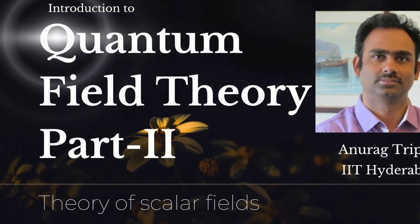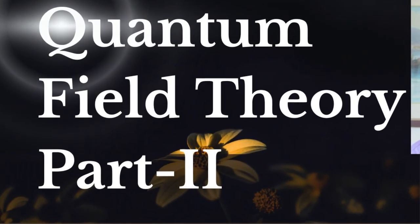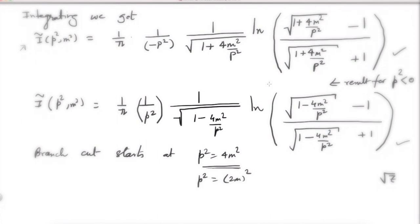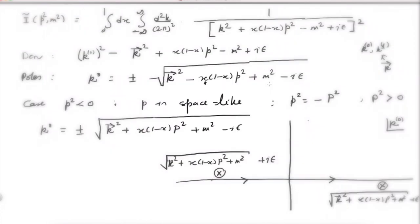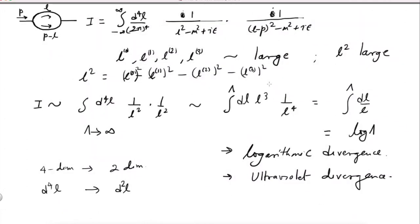In this video we will look at the generalization of the results proved last time. We were looking at a Feynman diagram where P is the momentum entering — the external momentum — where P could be time-like or space-like. We leave it general for now.